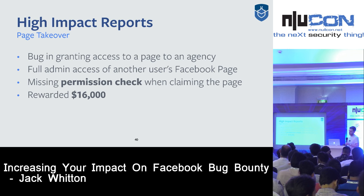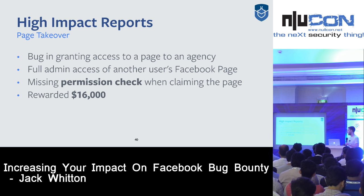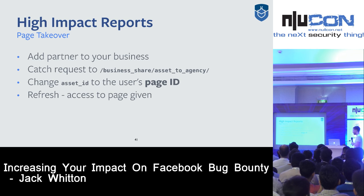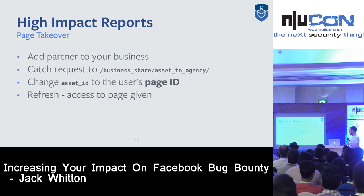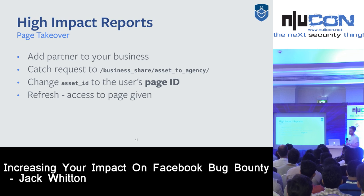This is a pretty typical example of the style of bugs with the highest impact at Facebook. You're less likely to find an XSS or CSRF — we have very good frameworks protecting against those — but the privacy and permission models of Facebook are very complicated and we have a lot of code changing frequently, so these reports really help us find these kinds of bugs. The exploitation: you would add a partner to your business, send a POST request to business_share/asset_to_agency, change the asset_ID to another user's page ID, and when you refresh the page you'd see it added to your business even though you didn't have access.